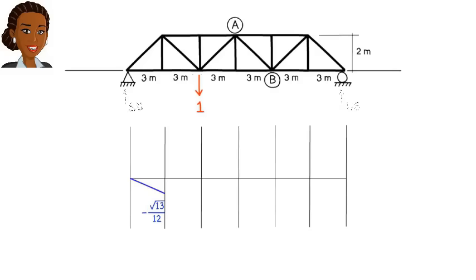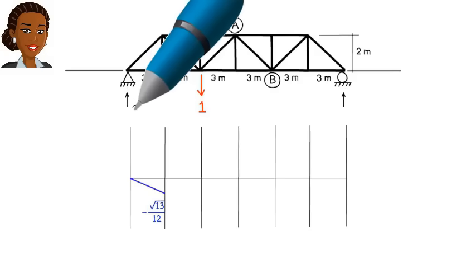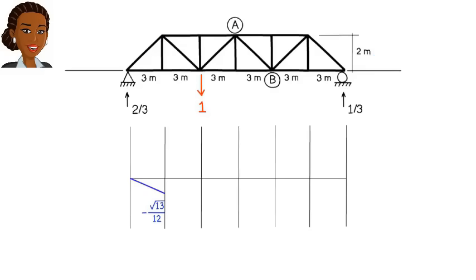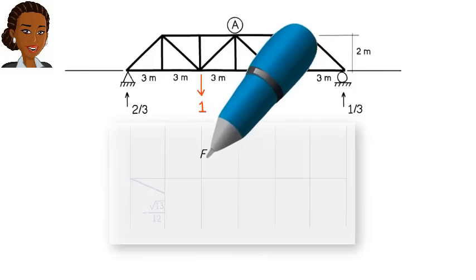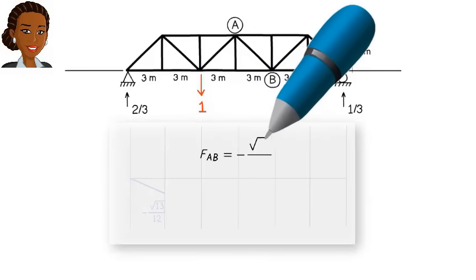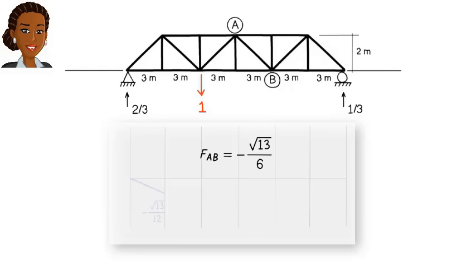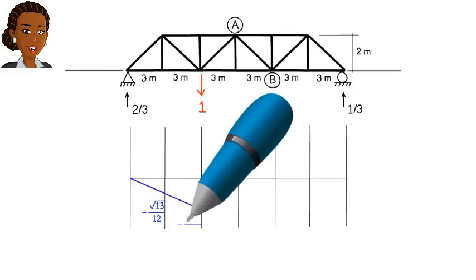Now we move the load to the next truss joint. We then calculate the resulting support reactions and determine the force in AB, just like the previous step. This time, we get negative square root of 13 divided by 6. We plot the point and connect it to the previous point using a straight line.